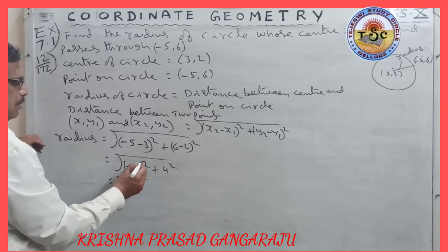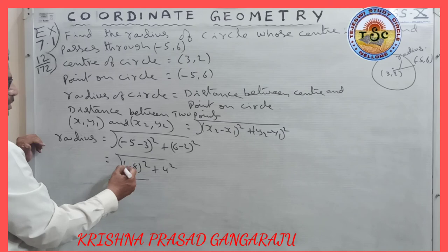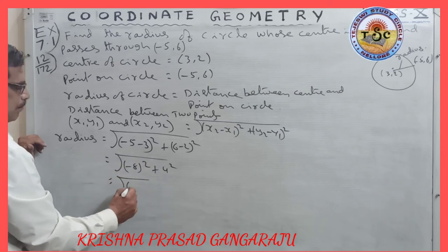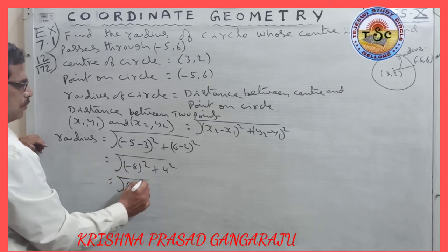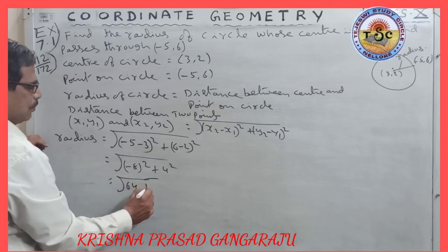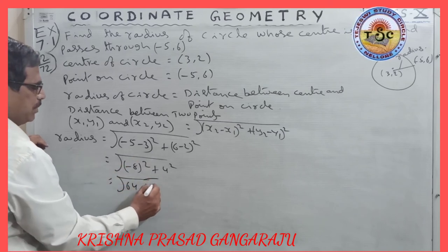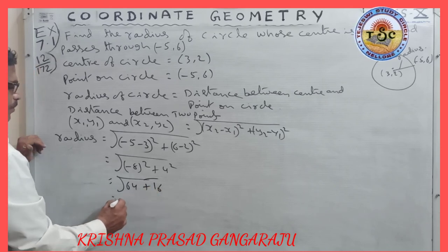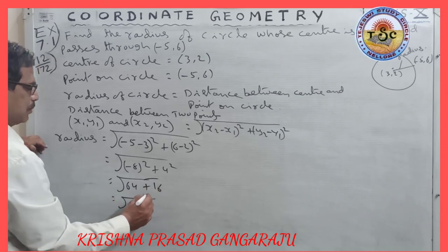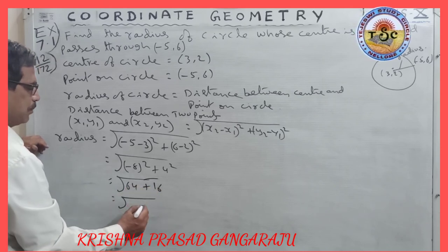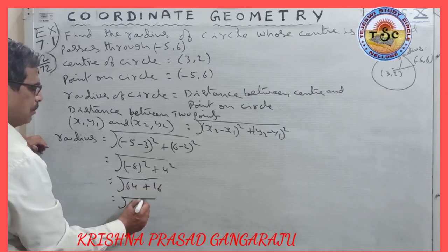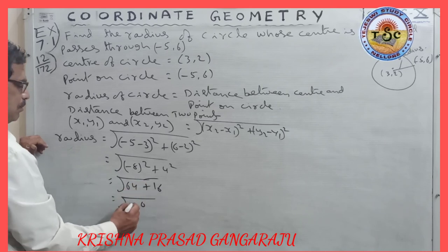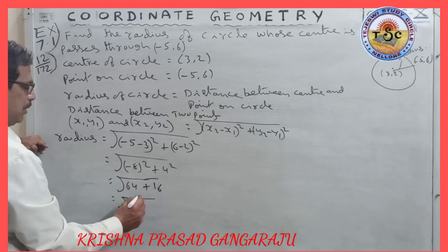That is: (−8)² = 64 and (4)² = 16, since the minus becomes plus when squared. So radius = root of 64 + 16 = root of 80.